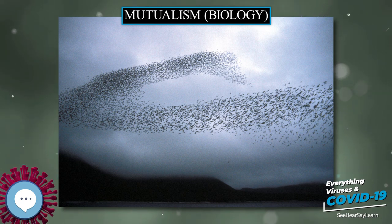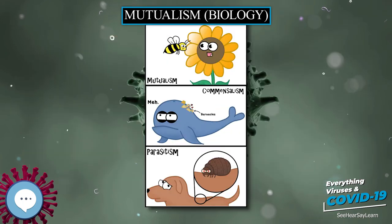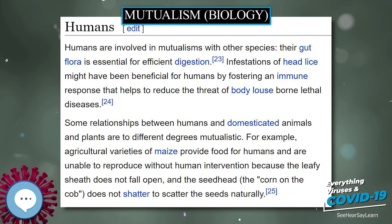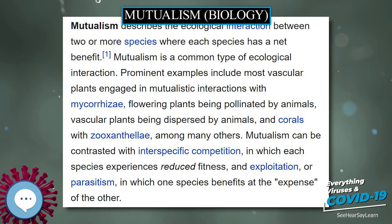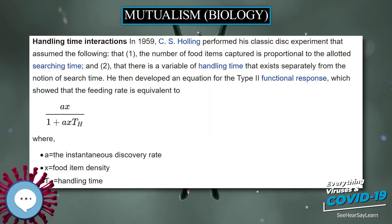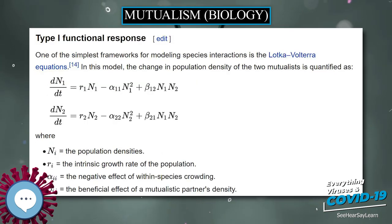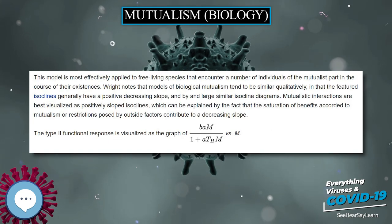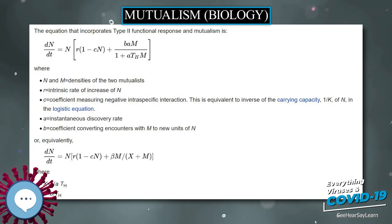Evolution of Mutualism. Mutualism Breakdown. Mutualisms are not static and can be lost by evolution. Sachs and Simms (2006) suggest that this can occur via four main pathways. There are many examples of mutualism breakdown. For example, plant lineages inhabiting nutrient-rich environments have evolutionarily abandoned mycorrhizal mutualisms many times independently. Measuring and defining mutualism: measuring the exact fitness benefit to the individuals in a mutualistic relationship is not always straightforward, particularly when the individuals can receive benefits from a variety of species, for example most plant-pollinator mutualisms. It is therefore common to categorize mutualisms according to the closeness of the association, using terms such as obligate and facultative.